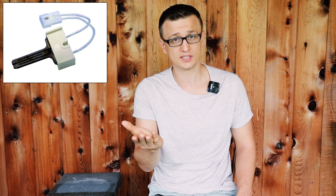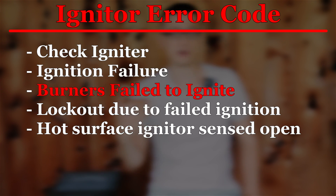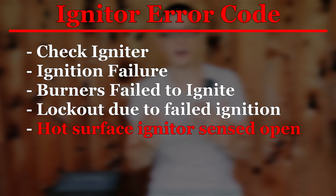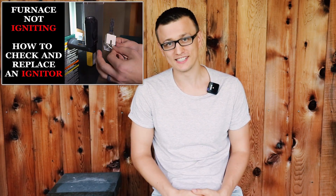The next three are in no particular order. The next one is the igniter code. If you're seeing some kind of igniter error code, that means your igniter is either bad — if you have a hot surface igniter, it might have burnt out — or it's simply not getting power from the control board. The purpose of the igniter is to ignite the gas, and if the furnace is sensing that the gas is not being ignited or the flames are not coming on, it'll shut the furnace off and give you an error code that has something to do with the igniter. The job of shutting the furnace off if there's no flames is left up to the flame sensor, so these two are kind of related. Here are a few examples of what an igniter error code would look like: check igniter, ignition failure, burners failed to ignite, lockout due to failed ignition, or hot surface igniter sensed open. If you're seeing an error code that looks something like that, there's a good chance your problem has to do with the igniter. I have a video on how to check and replace an igniter if you need it.